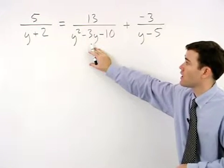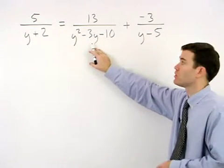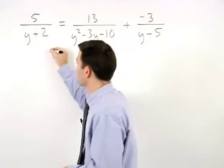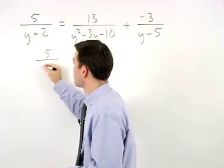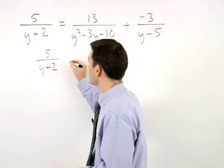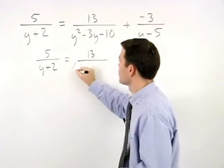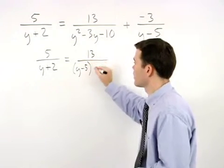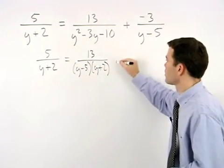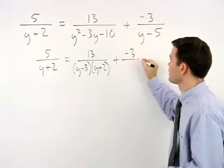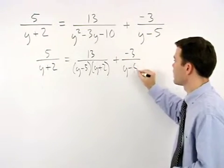So we have 5 over y plus 2 equals 13 over y minus 5 times y plus 2 plus negative 3 over y minus 5.